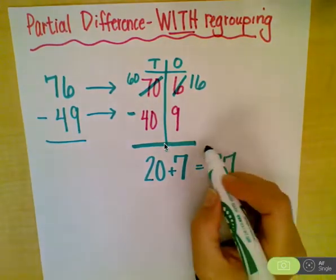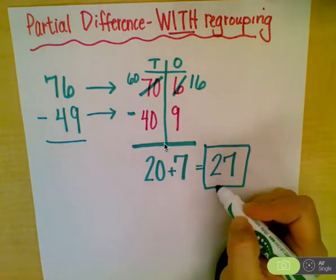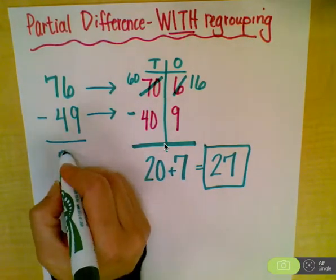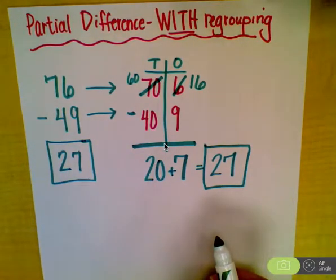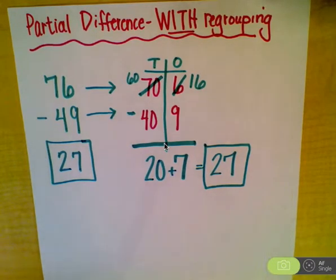Being sure to box in my final answer, and I also like to have the final answer over here on the original problem. So that is partial difference with regrouping or borrowing, and it's very similar to partial sums and partial difference without regrouping.